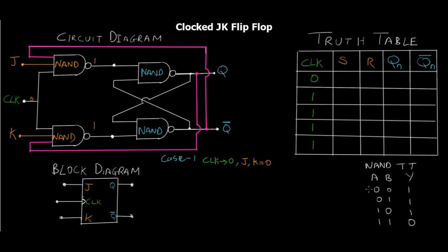As you can see on the screen, if any of the inputs in the first three cases is zero, the output is always going to be one. This output of one-one is fed to the next line of NAND gates. When we studied the SR latch, whenever the input to the two NAND gates is one-one, the output is always going to be the previous state — the latch state. So if clock is zero, regardless of what J and K are (don't care condition), the output is always going to be Q(n-1) and Q-bar(n-1).